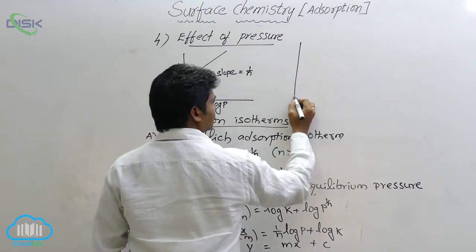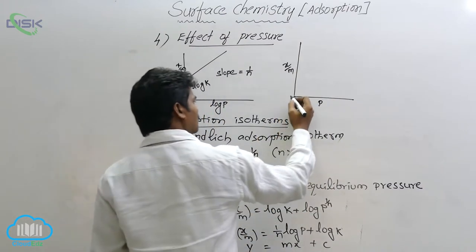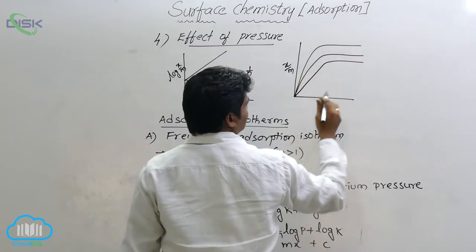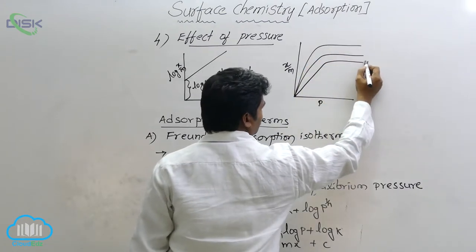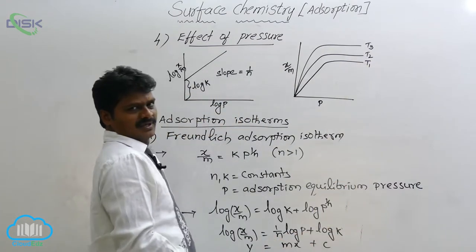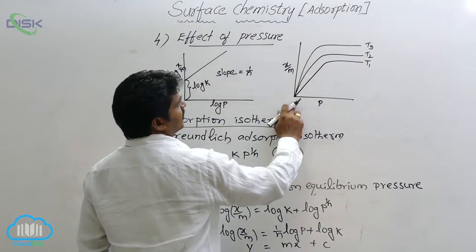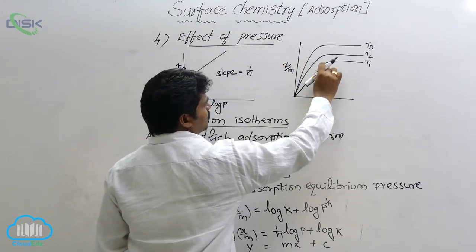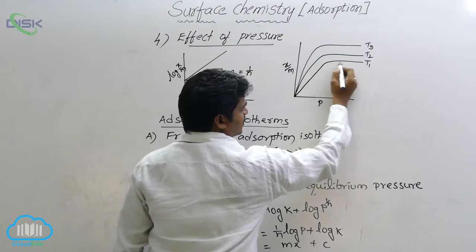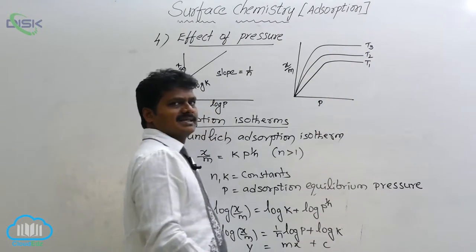If you draw the graph directly between x/m and pressure, it will give a different type of curve. This graph is drawn at constant temperatures T1, T2, and T3. With increase in pressure, the extent of adsorption increases up to some pressure. After that pressure, it remains constant — that is, the curve becomes parallel to the x-axis. This same behavior is observed at T1, T2, and T3.